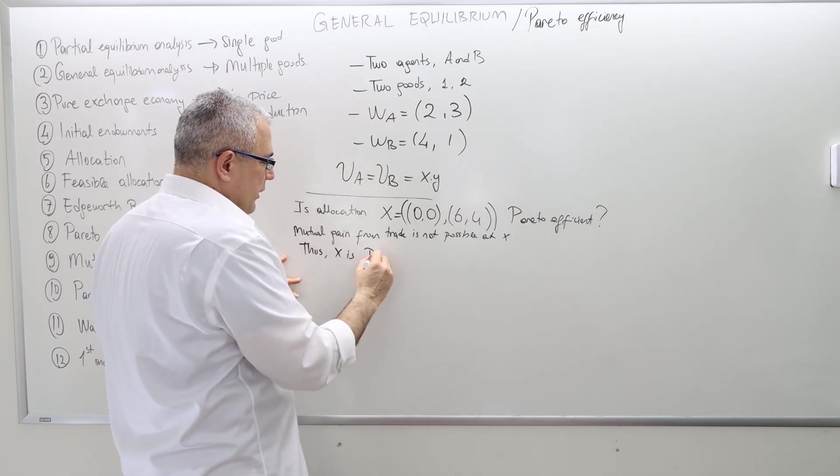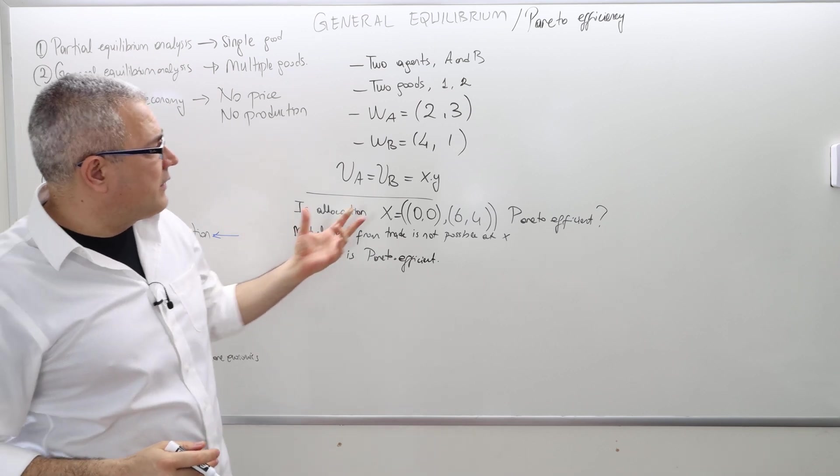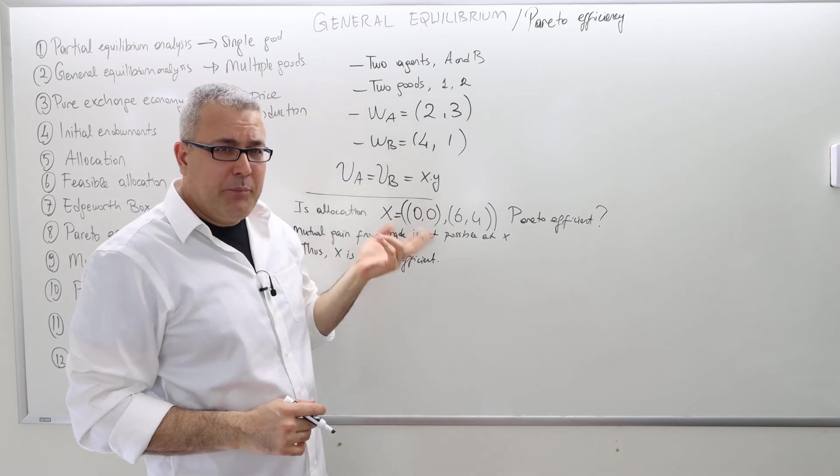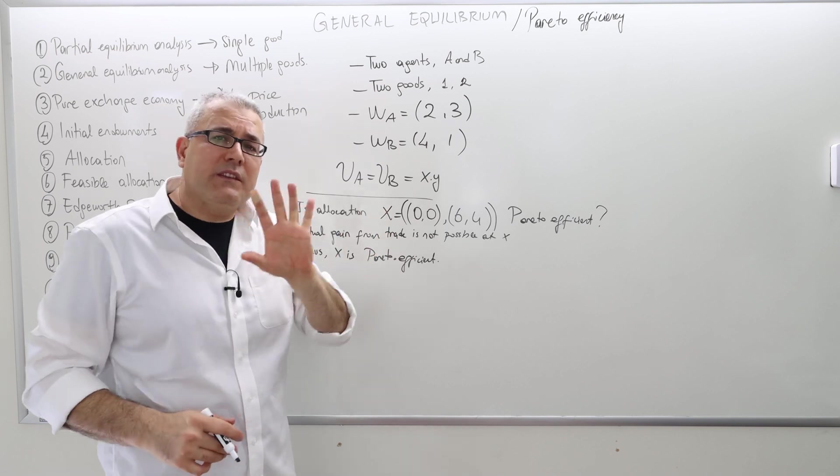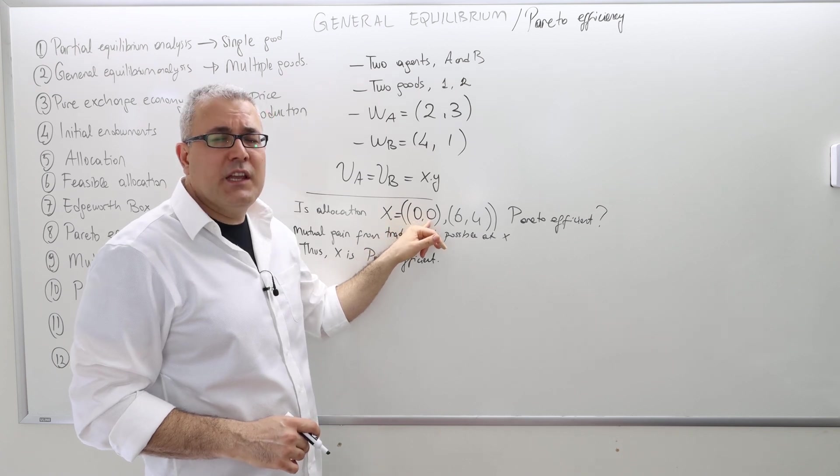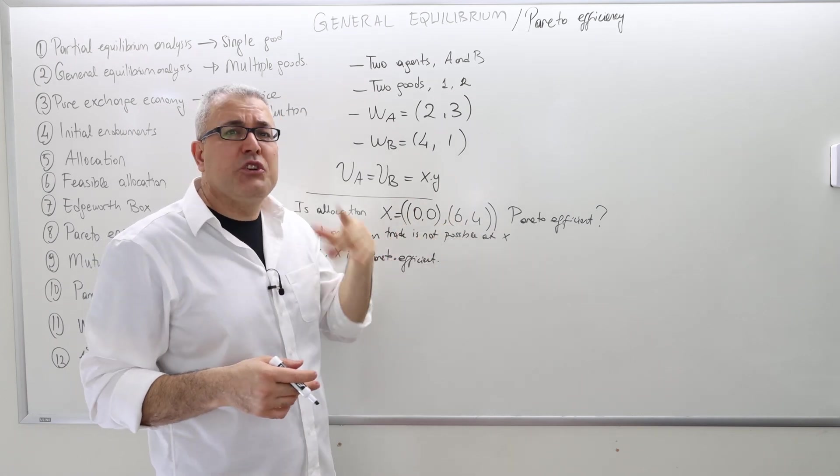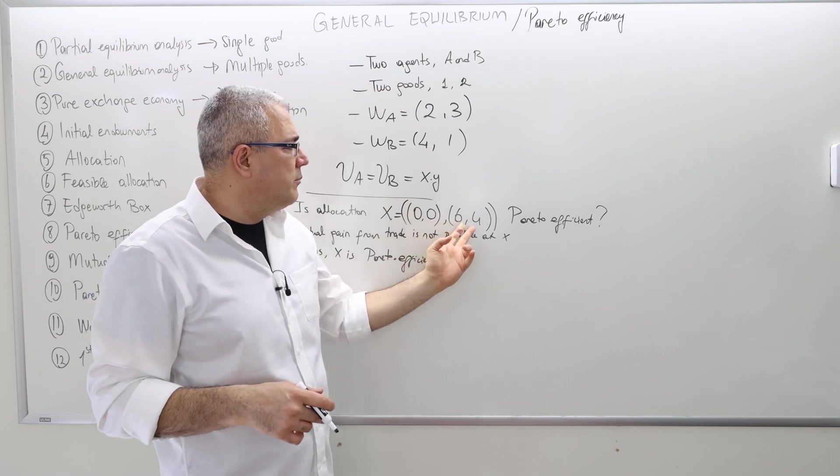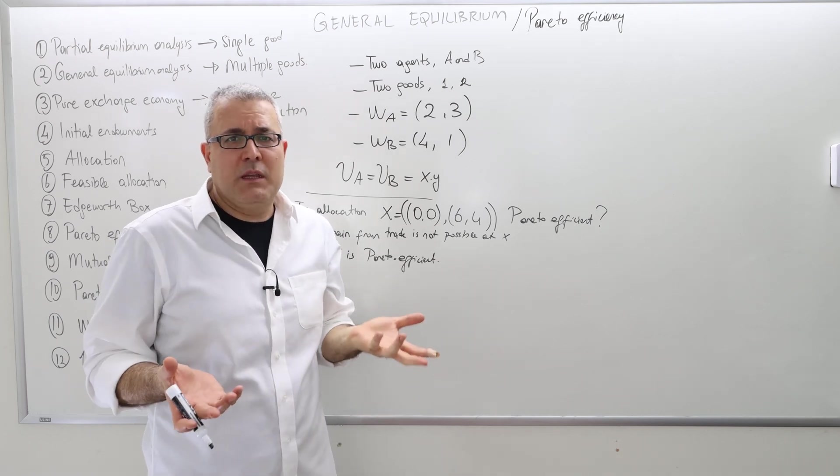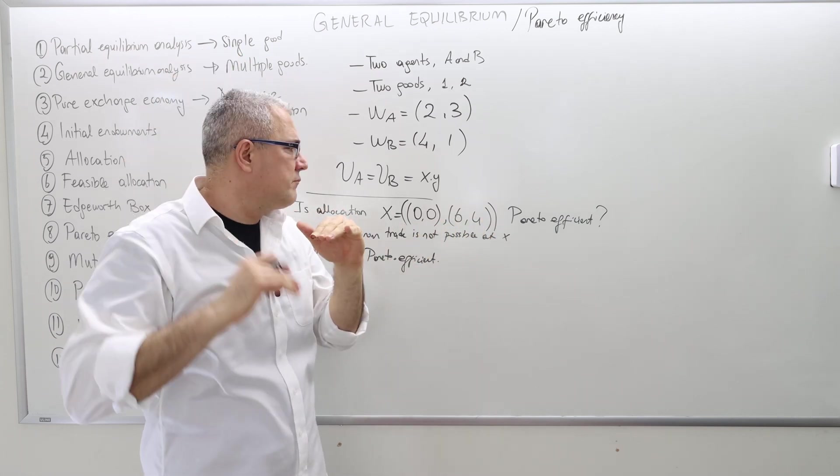Mutual gain from trade is not possible at this allocation x. Thus, x is Pareto efficient. How do I know that? The utility function is x times y. If you want to keep agent A at the same level of utility, zero, don't give any x or y to this agent. But then I need to make agent B strictly happier, and unfortunately, he's already getting everything and I can't give him more because it would be infeasible.